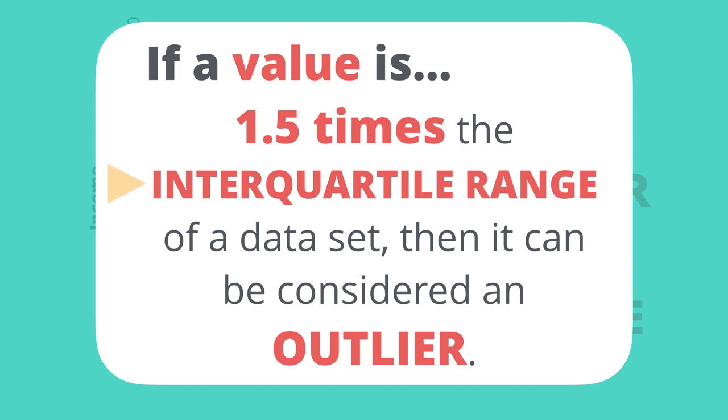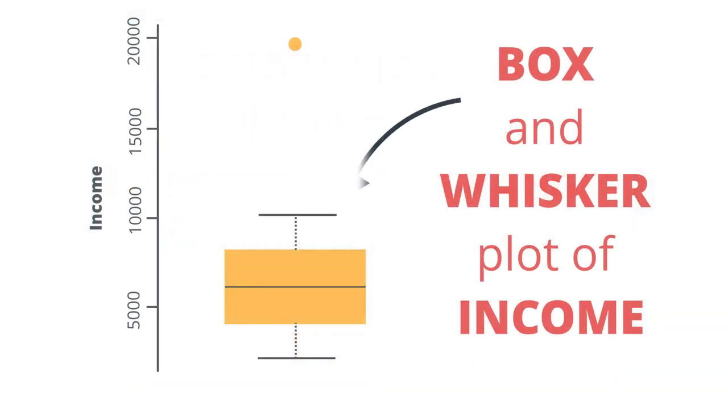Now we just threw in the mix the term interquartile range, which may not be familiar to all of us. So let's take a look at what that looks like and means. Here we have a simple box and whisker plot that uses our same income data example that we built out the histogram with.